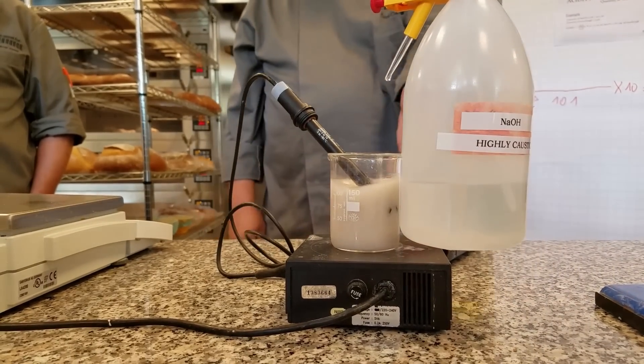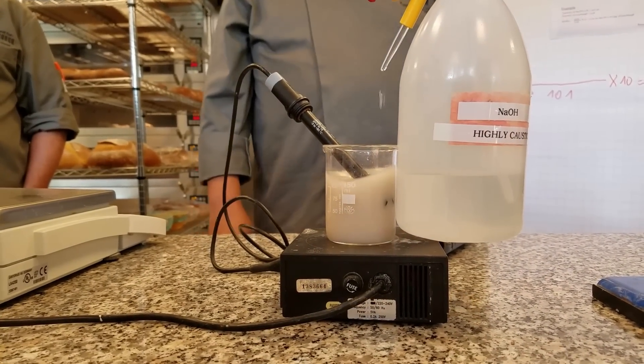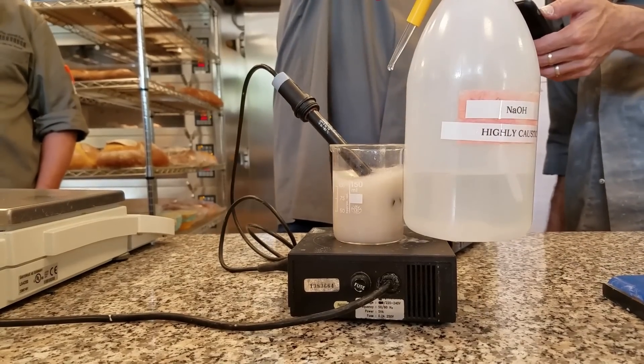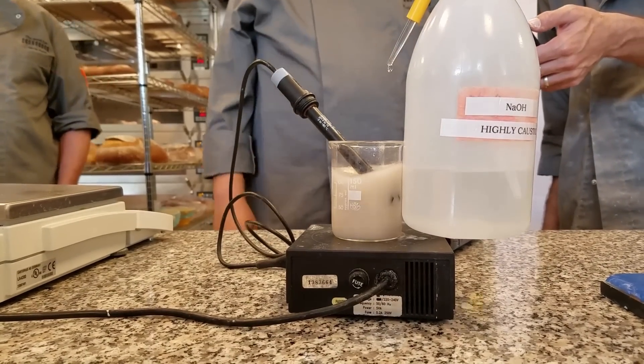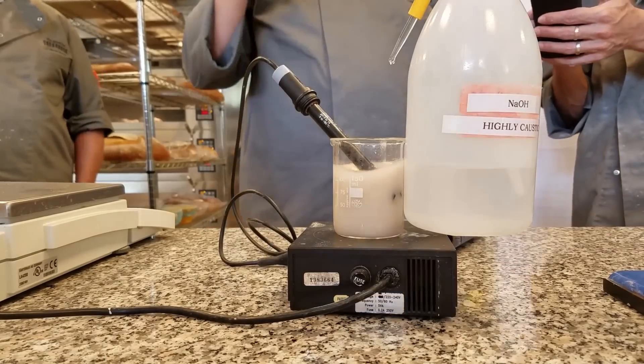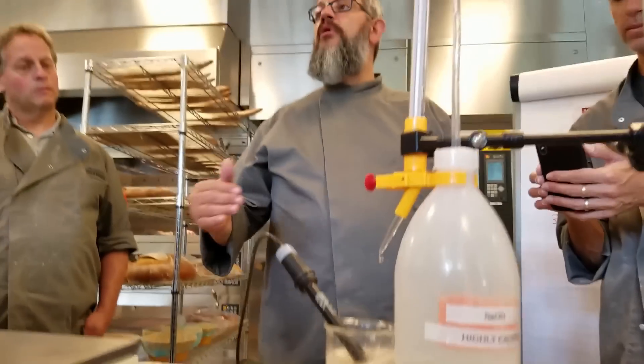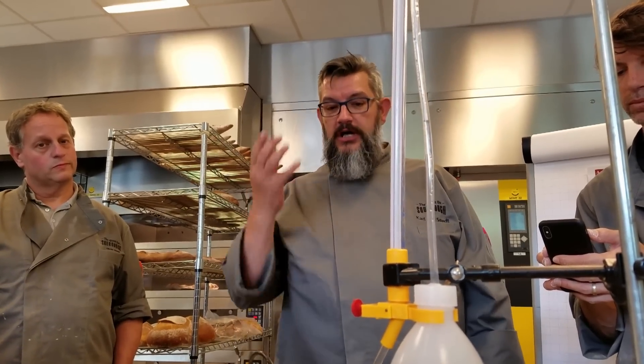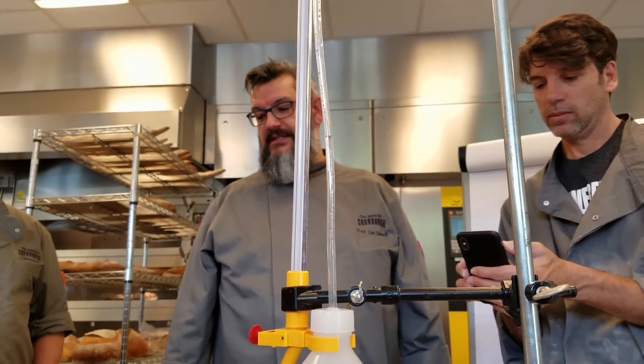So if you keep an eye on the pH meter now, it starts going up. Are you counting drops? No, we will measure here afterwards. And we stop at 8.4 because above 8.4, you can't measure them anyhow. So it's what you measure at 8.4. That's the total titratable acidity.